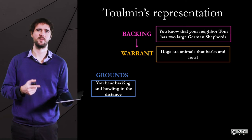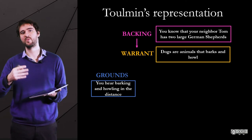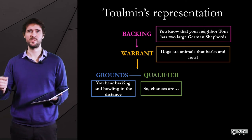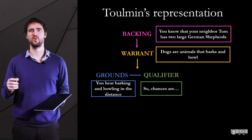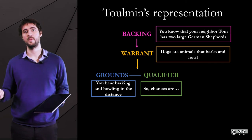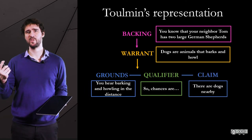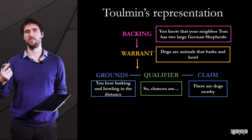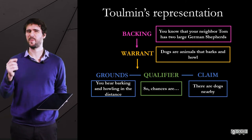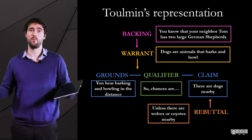More often than not, the warrant is implicit in an argument, but if you want to use the Toulmin model, then you have to write down everything. The qualifier — so, 'chances are' — is what's going to enable you to shift to the claim from the grounds. And then the claim itself: there are dogs nearby. But since in an abductive argument there is no deductive form of reasoning, you are not 100% sure. So it's best if you add a rebuttal, such as: unless there are coyotes or wolves nearby.